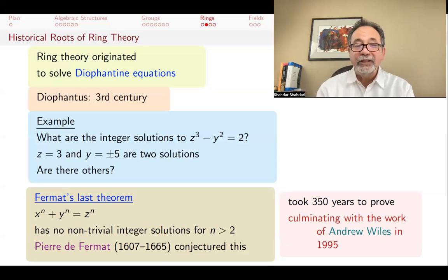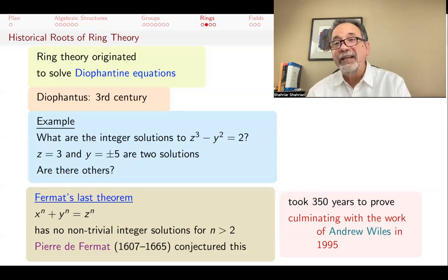Actually knowing that x to the n plus y to the n equals z to the n has no non-trivial solutions for n greater than 2 doesn't buy you anything. There's no applications or uses for this fact. It's very hard to monetize this result. However, the mathematics that was developed in the process, including ring theory and other parts of algebra, has been extremely useful.